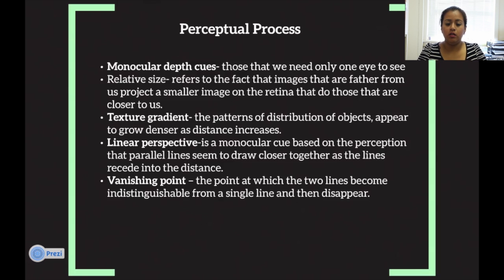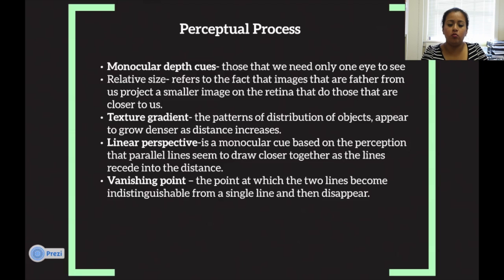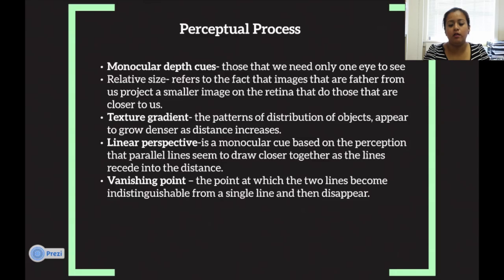Monocular depth cues are those we need only one eye to see. Relative size refers to the fact that images farther from us project a smaller image on the retina than those closer to us. Textural gradient: the pattern of distribution of objects appears to grow denser as distance increases. Linear perspective is a monocular cue in which parallel lines appear to converge as they recede into the distance. The vanishing point is the point at which two lines become indistinguishable from a single line and then disappear.